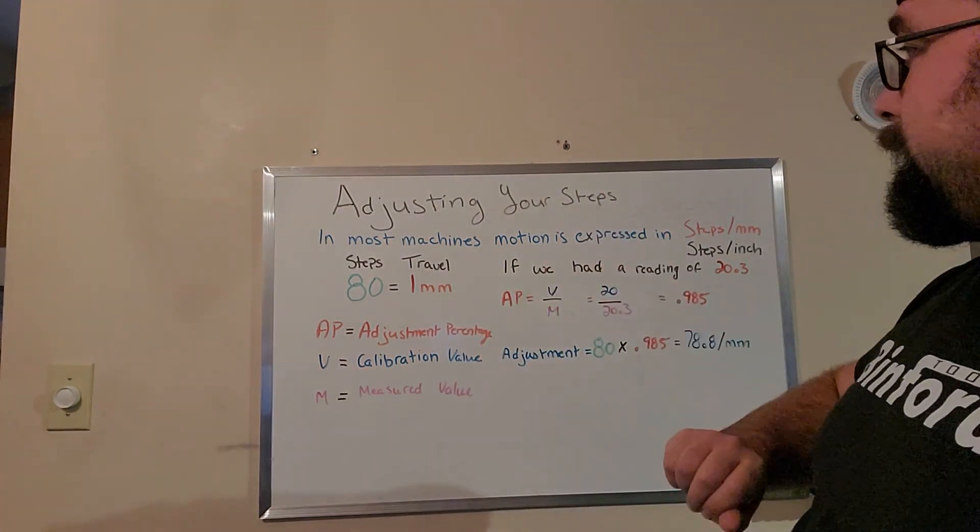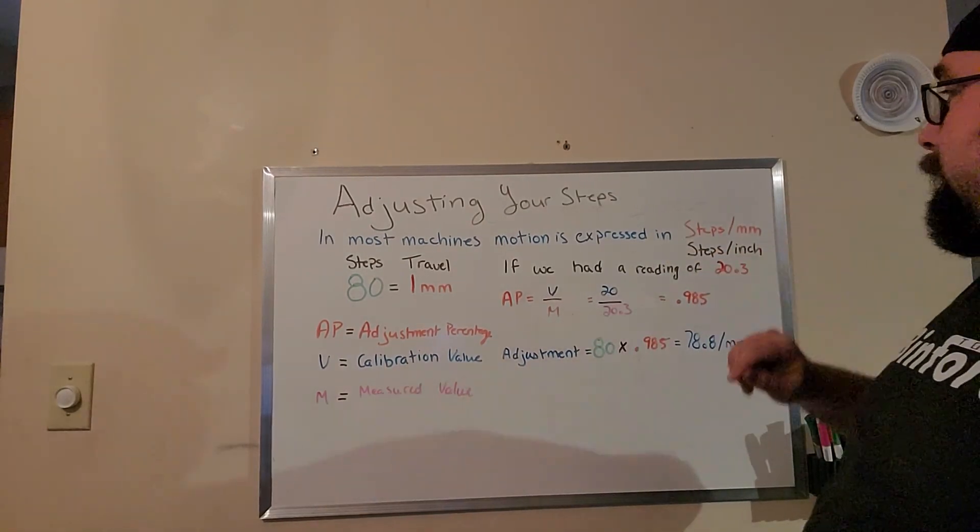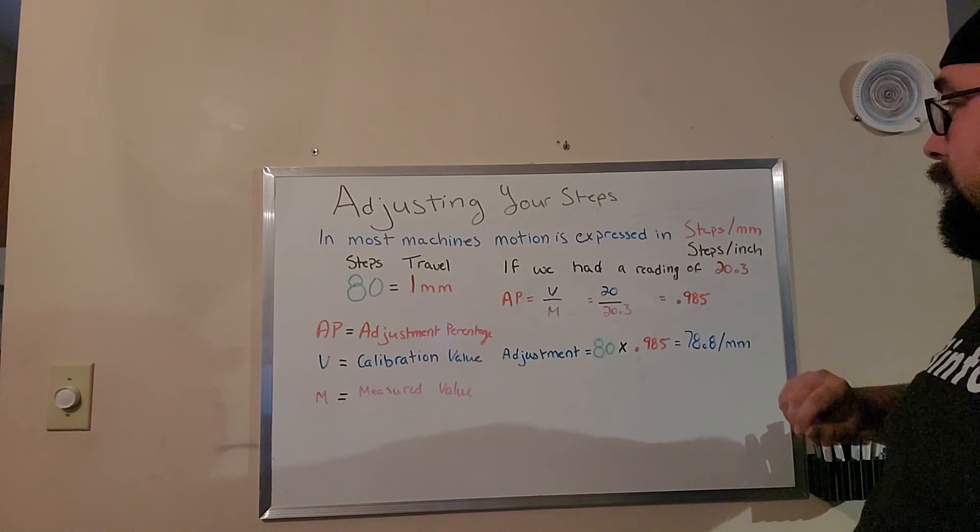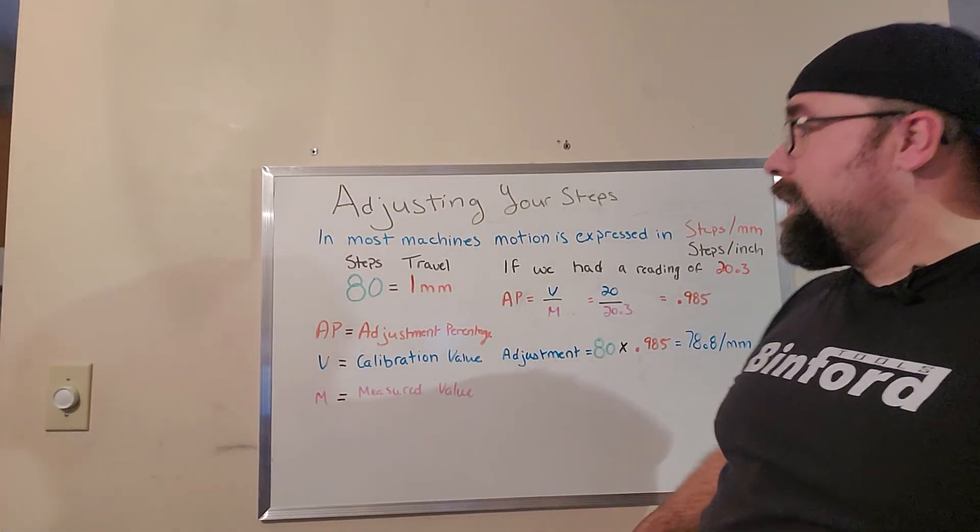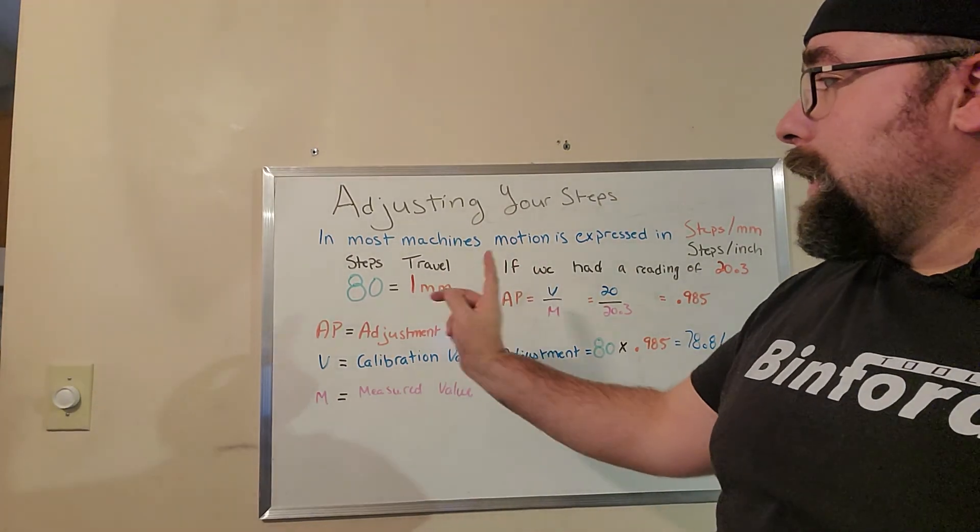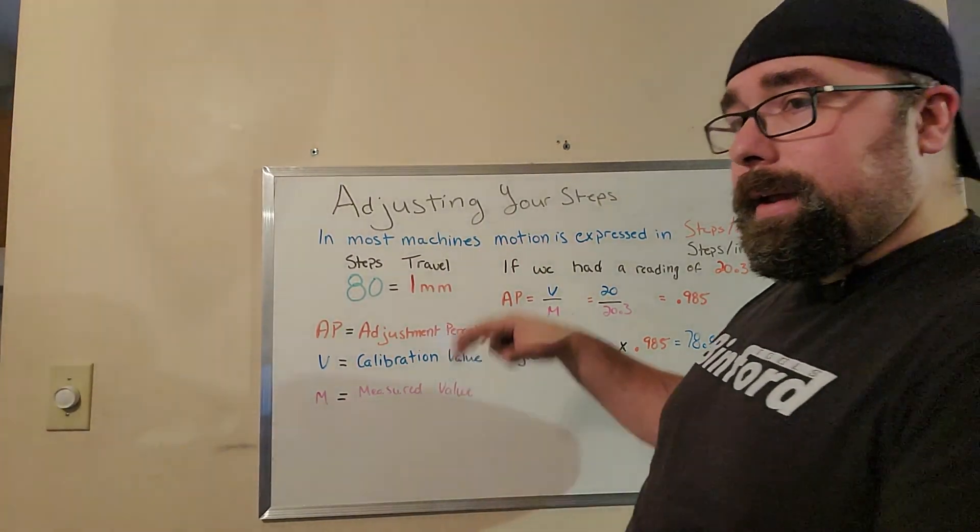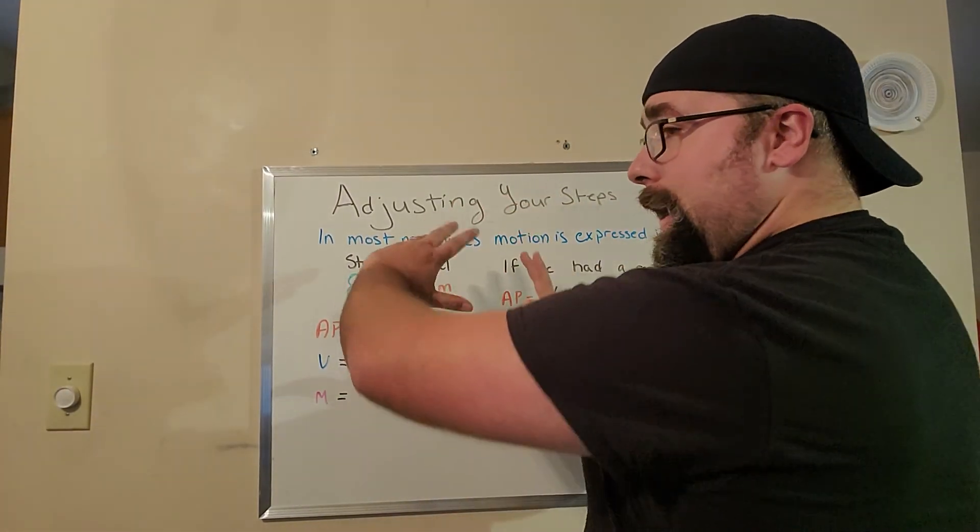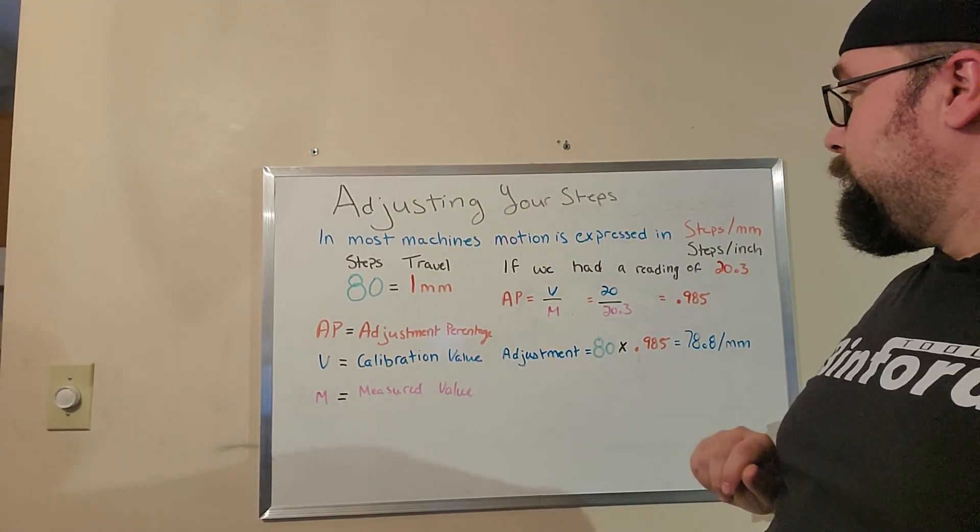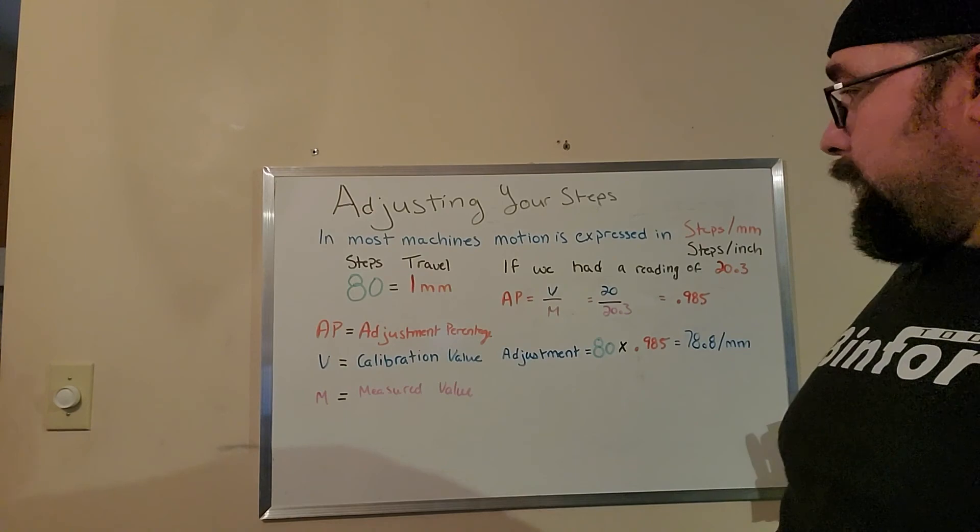So in most machines, motion is expressed in steps per millimeter. If you're one of those crazy imperial people and have switched it over, it might be in steps per inches. In my machine right now, I have 80 steps for every one millimeter of travel. So that means that on that little rotor, 80 steps have to go by to get one millimeter. So if we had that reading of 20.3...